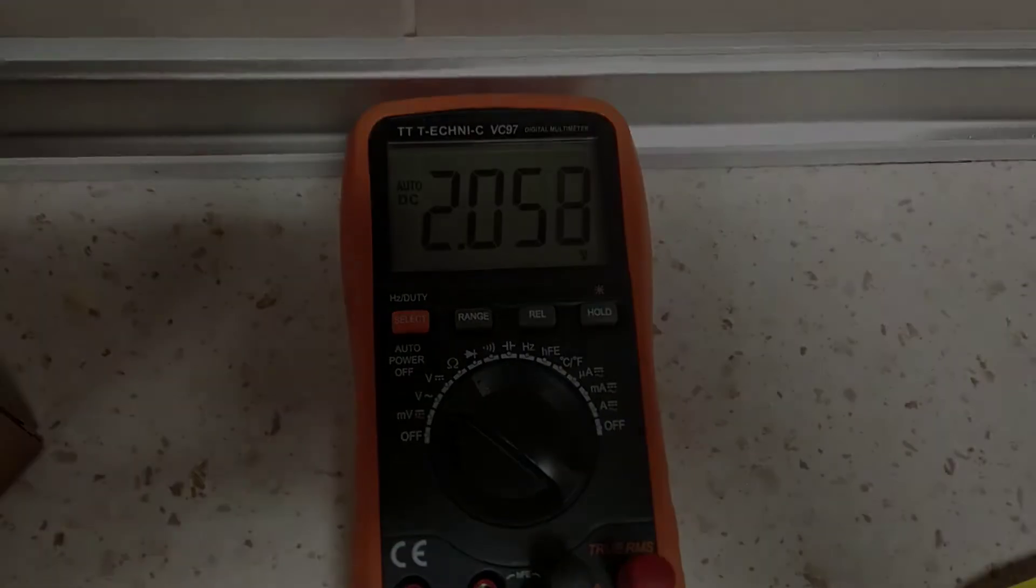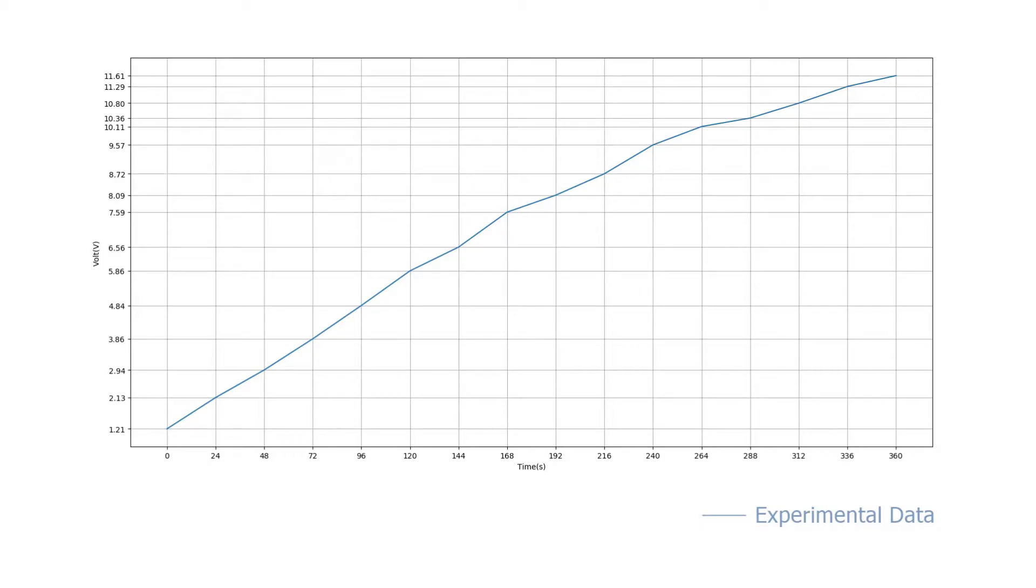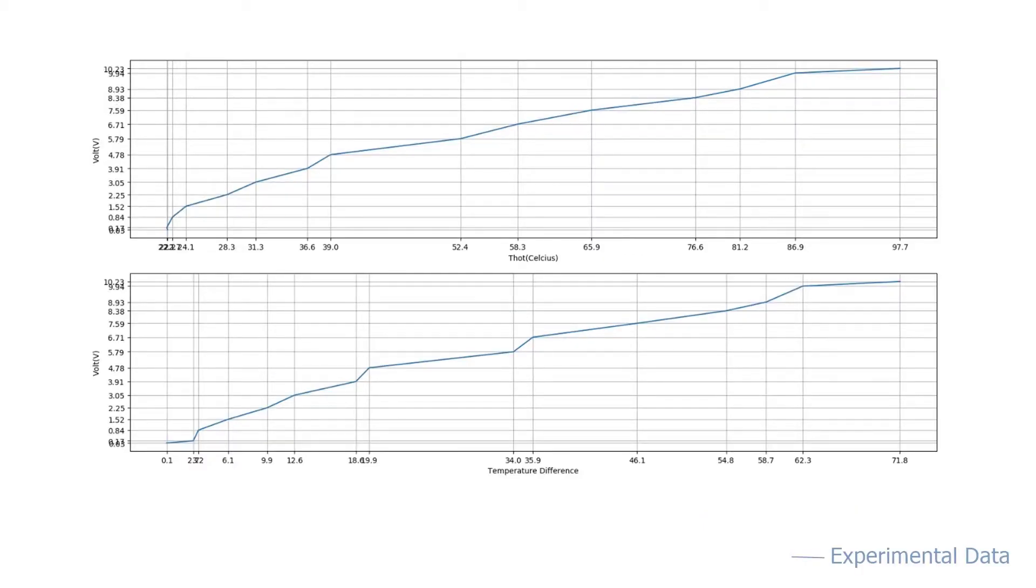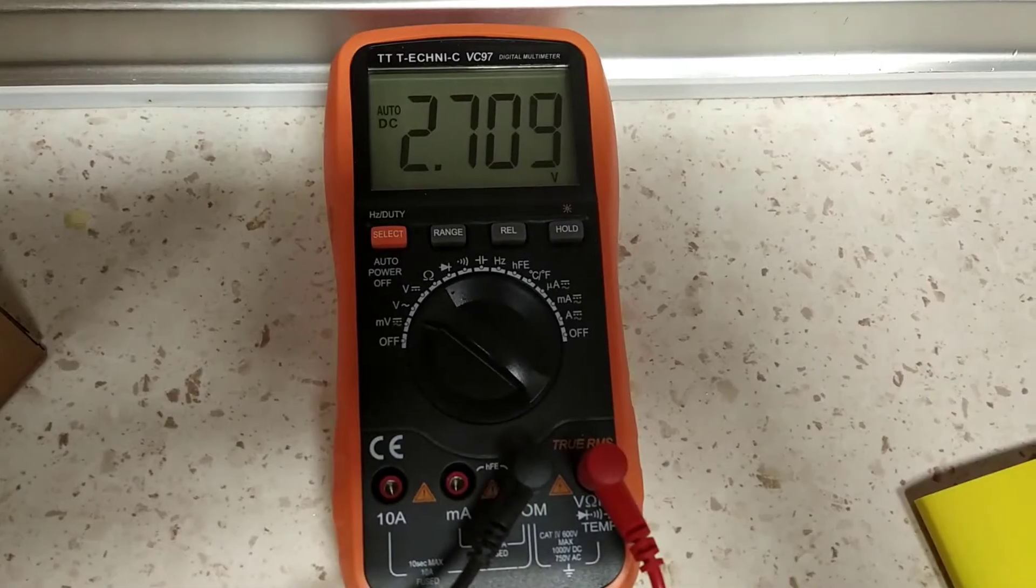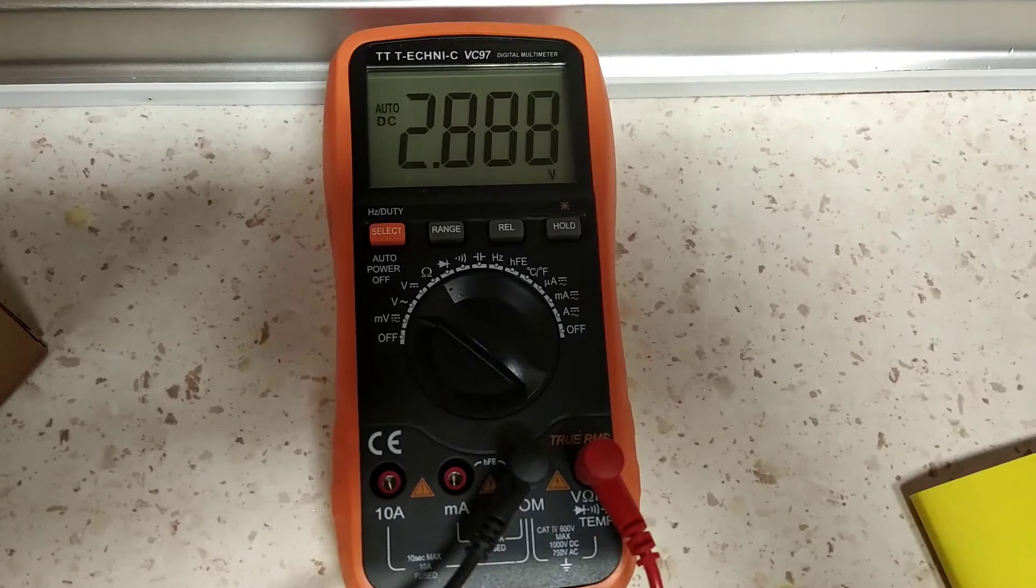And as we plot the data of voltage difference versus time, or voltage difference versus temperature difference, or voltage difference versus the temperature of the hot side, we can actually come up with a polynomial fit to find out the Seebeck coefficients for one TEG, which future scientists can use in their experiments.